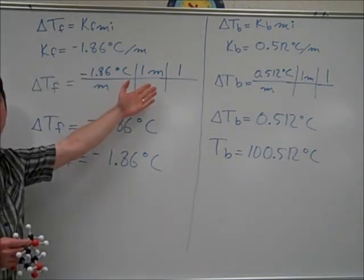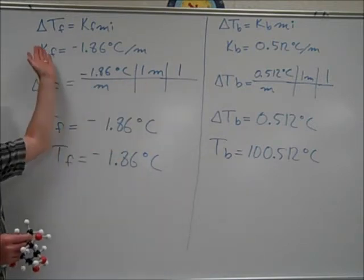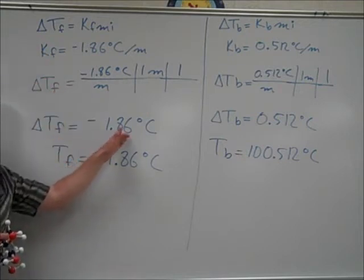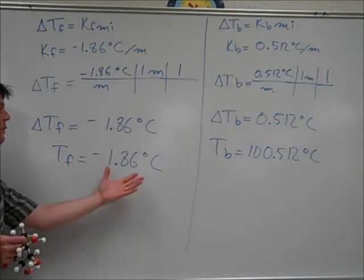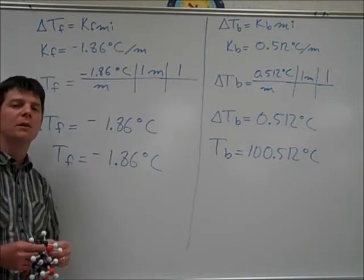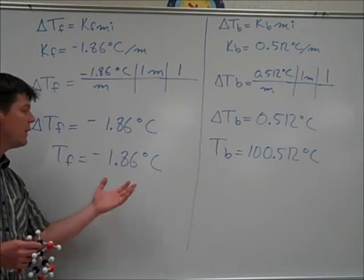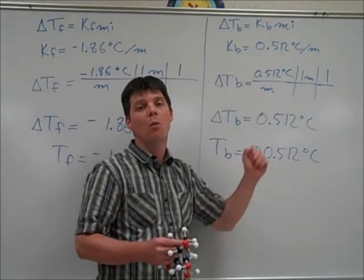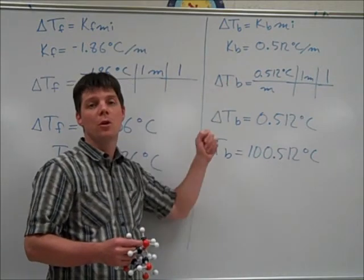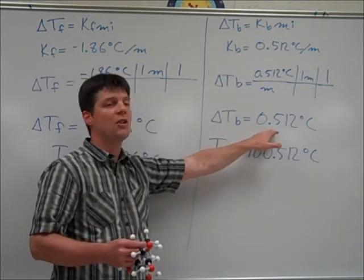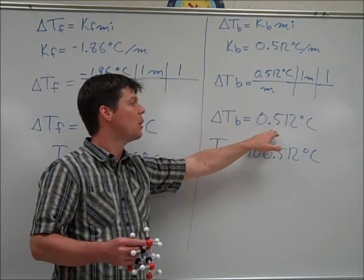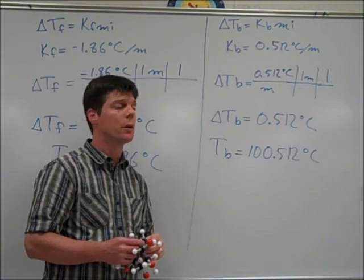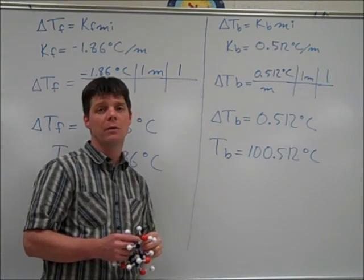Using an i value of 1 in the freezing portion of the problem gives a change in temperature of negative 1.86 degrees Celsius. Because the normal freezing temperature of water is zero, this is also the new freezing temperature. Using an i value of 1 in the boiling portion produces a change in boiling of 0.512 degrees Celsius, meaning the elevated boiling temperature will be 100.512 degrees Celsius.